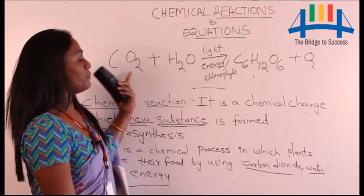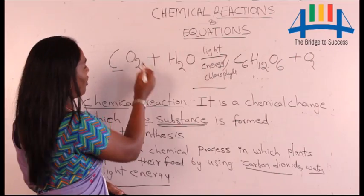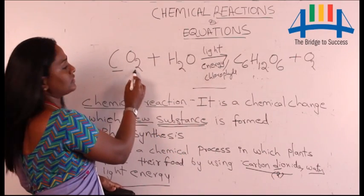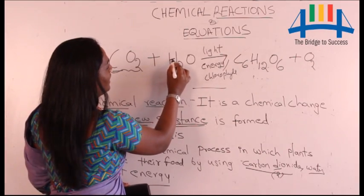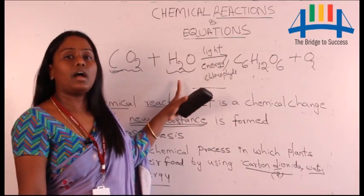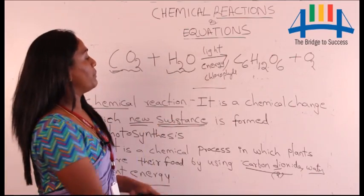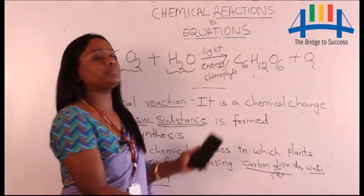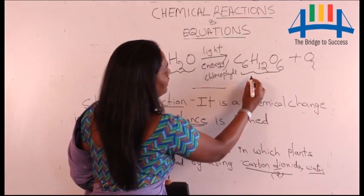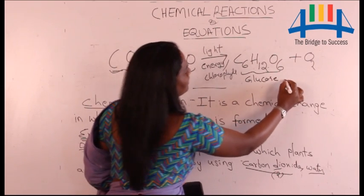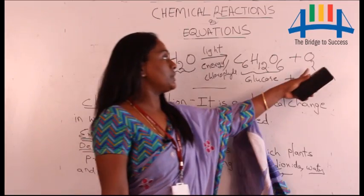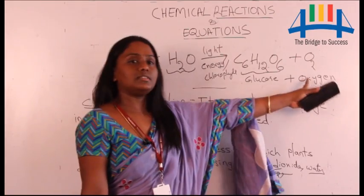Chlorophyll is the green pigment present in plants. Carbon dioxide is the word form — in symbolic form, carbon is the element and dioxide means two oxygens, so together it is CO₂. Water is a combination of oxygen and hydrogen, giving H₂O. Plants use light energy and the chlorophyll pigment together to prepare food, which we get in the form of glucose or carbohydrates, and oxygen — O₂ — is also released.